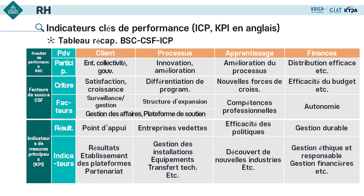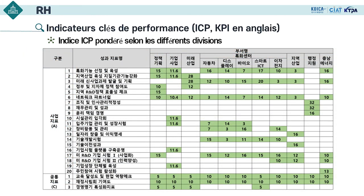Voici l'exemple d'ICP de Chungnam Technopark : un tableau récapitulatif couvrant BSC, les facteurs de succès et l'ICP évaluant les résultats. L'année dernière, nous avions 23 indices ICP pour l'évaluation. Toutes les 10 divisions ne doivent pas répondre à tous les 23 indices — elles peuvent choisir selon les caractéristiques de leur travail et convertissent leurs points en échelle de maximum 100. Les indices ICP sont composés d'indices quantitatifs et qualitatifs.